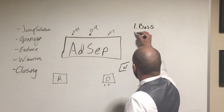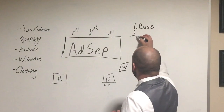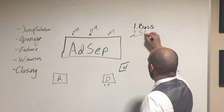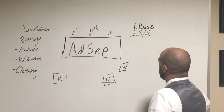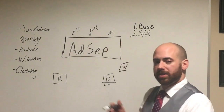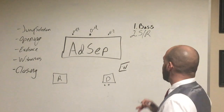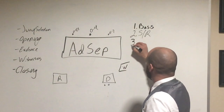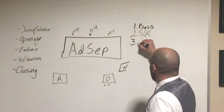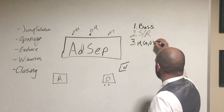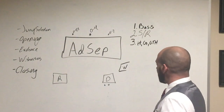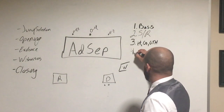If the board decides to retain, the service member goes back to the unit and questions three and four are not addressed. If they decide to separate, they go to number three: what is the service member's characterization of service — honorable, general, or other-than-honorable?